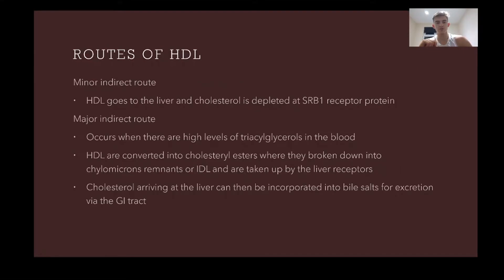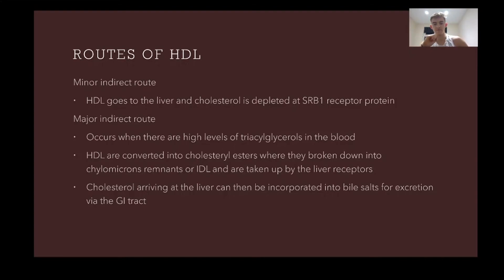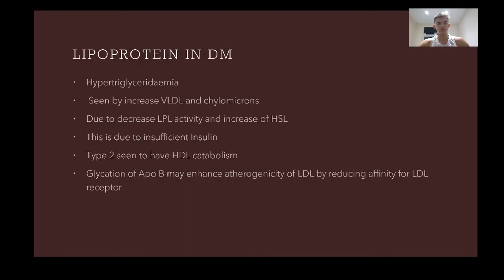HDLs then route the collected material back to the liver. The minor indirect route is where HDL goes directly to the liver and cholesterol is depleted at the SRB1 receptor. The major route occurs when there are high levels of triacylglycerols in the blood: HDLs are converted into cholesterol esters, broken down into chylomicron remnants or IDLs, and taken up by B/E liver receptors. Cholesterol in the cell can also be incorporated into bile salts and excreted via the GI tract.